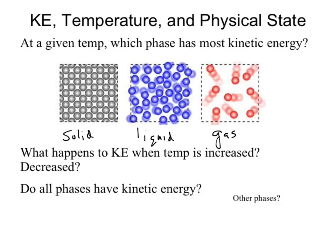Every phase has kinetic energy. When you increase the temperature, you're adding energy that turns into more kinetic energy, making the particles move faster — which starts to break intermolecular forces and potentially move to a new phase, be it liquid or gas. There are other phases too: the aqueous phase, which is having something dissolved in water. There are also plasmas and other phases, but the ones we're concerned with are solid, liquid, gas, and aqueous.